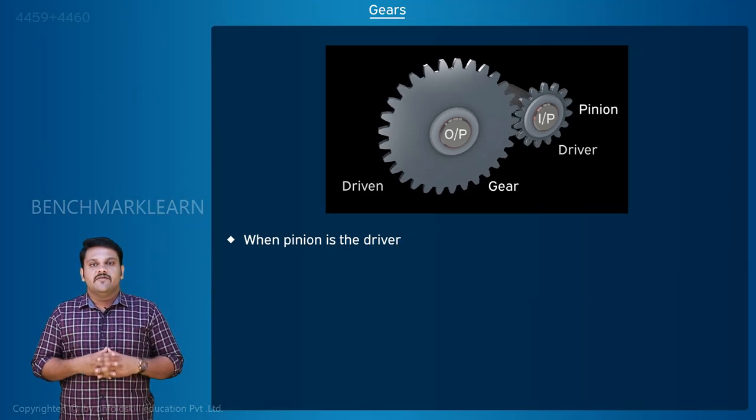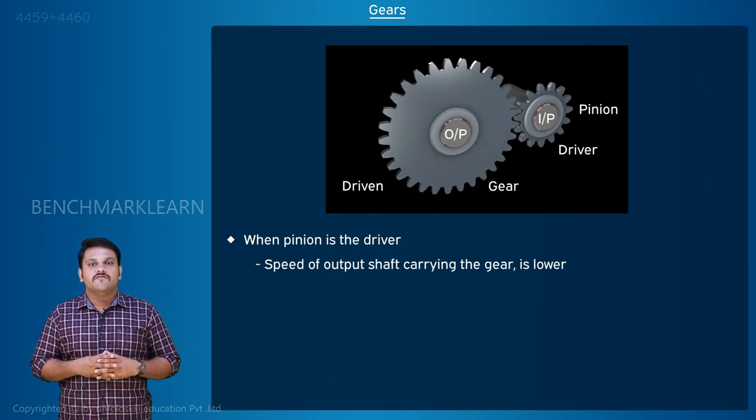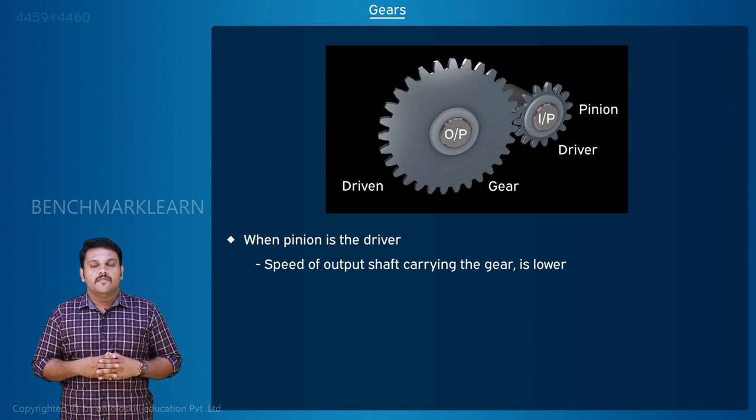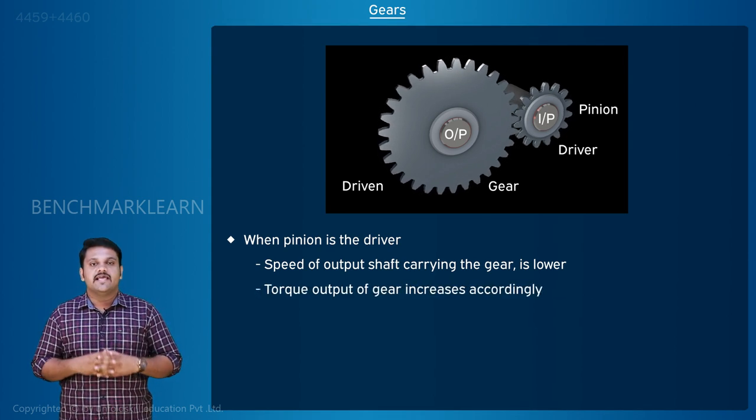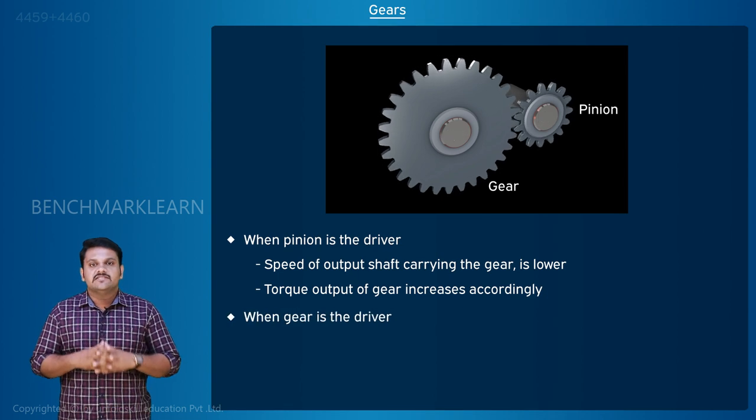When the pinion is the driver, the speed of the output shaft carrying the gear is lower, but the torque output of the gear increases accordingly.